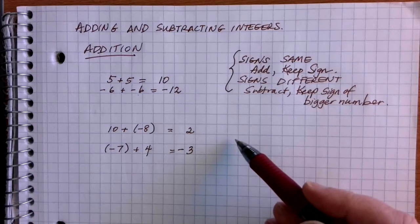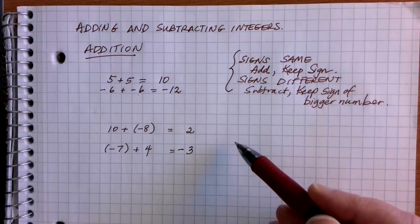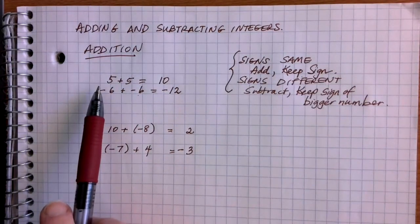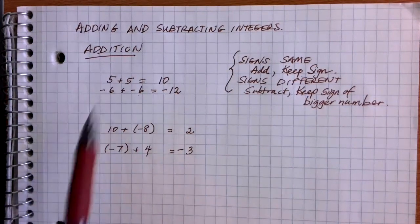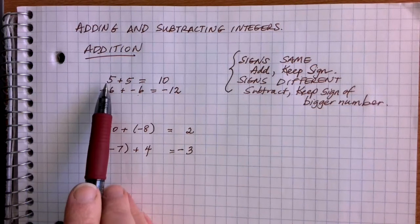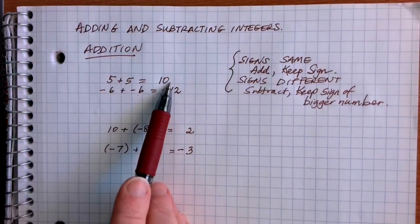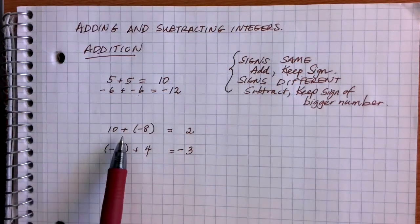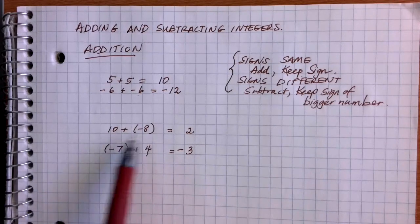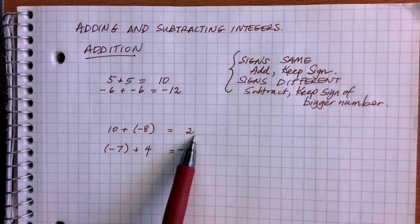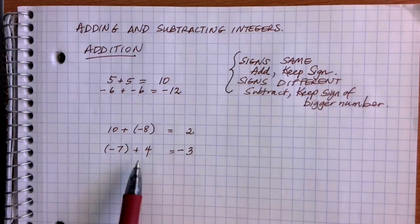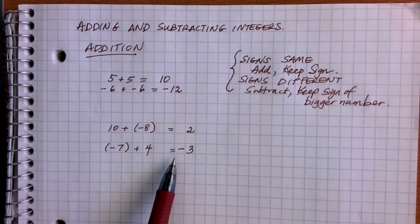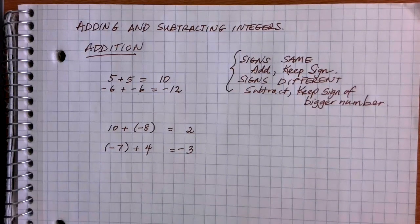One thing that really helps with addition is to think in terms of money. If you think of positive numbers as having money and negative numbers as owing money, all of these rules make sense. If you have money and add more money, you have a lot more. If you owe someone and then owe someone more, you owe a lot more. If you have $10 and owe someone $8, you still have $2 left. If you owe someone $7 but only pay $4 back, you still owe them $3. Thinking in terms of finances is really helpful when dealing with positive and negative numbers.